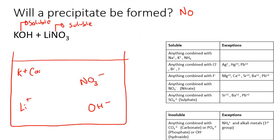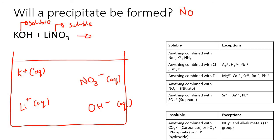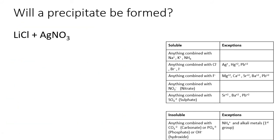In future lessons I'm going to do examples where we look at reactions, balance them, and identify which substances are precipitates and which are aqueous. We'll also look at overall ionic equations and net ionic equations — that's all coming up in future lessons.